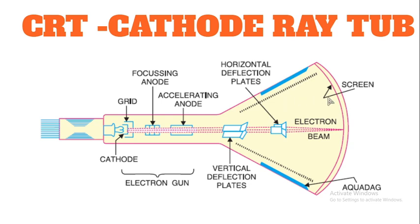This is a certain amount of electrons. This is a screen pen display. This is the reflection of the electrons on the screen.